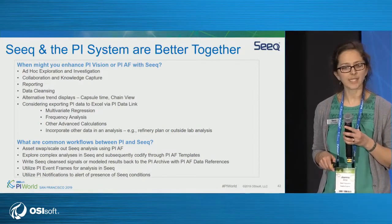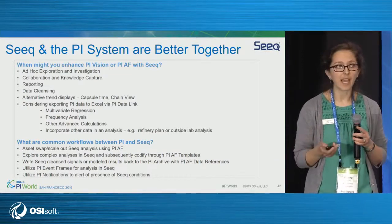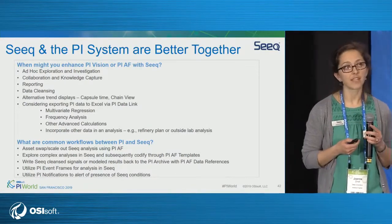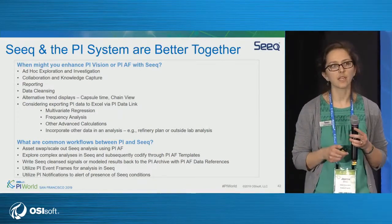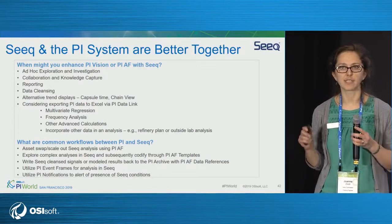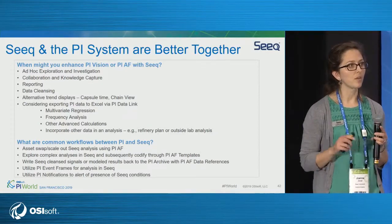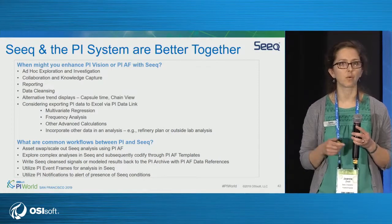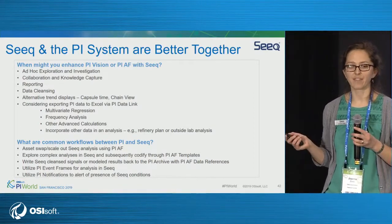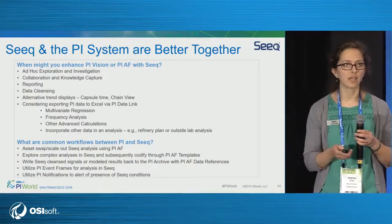Some common workflows we see: utilize asset framework once you've built it up to scale out your analyses in SEEK. As you're still building asset framework, you can start working with SEEK and it will sync with asset framework each time you have an update — don't wait until AF is finalized to jump in. Explore those complex analyses in SEEK, and when your subject matter expert is content, institutionalize them with AF. You can write cleansed or modeled signals back and spread those across the organization. Utilize PI event frames for analysis in SEEK, and use those event frames with PI notifications to let you know when something important might be going on.